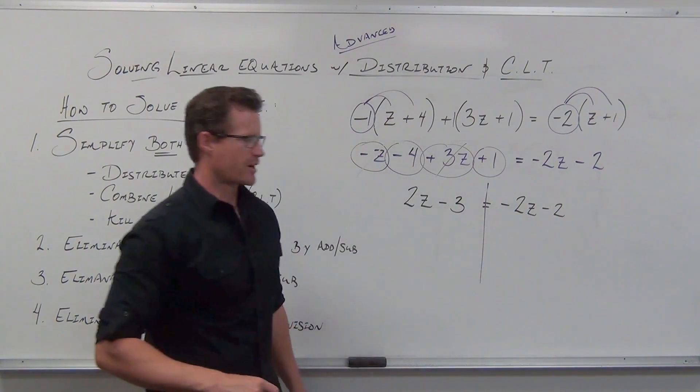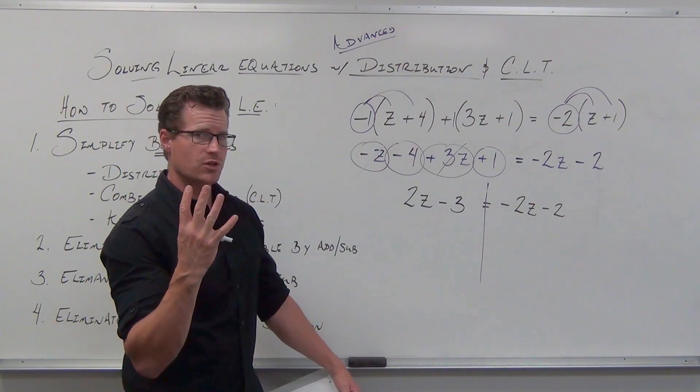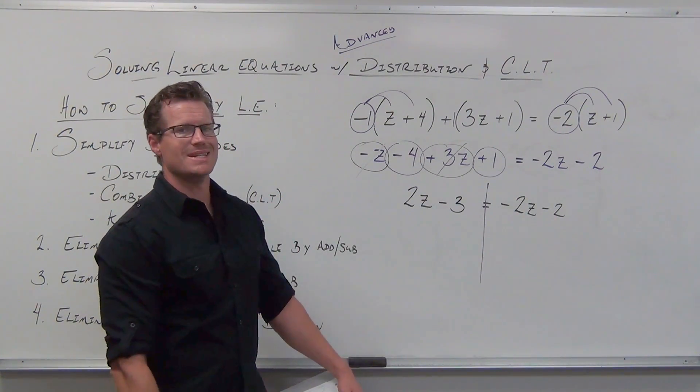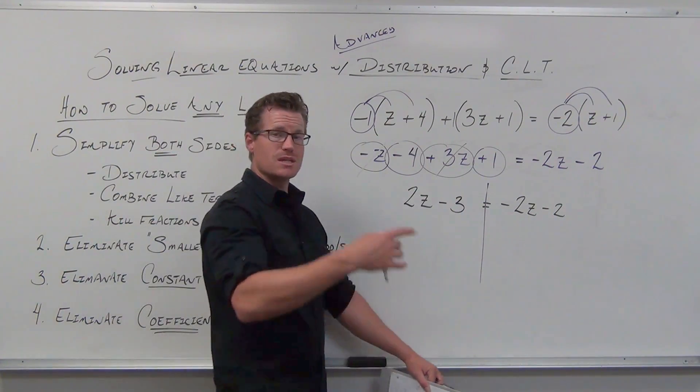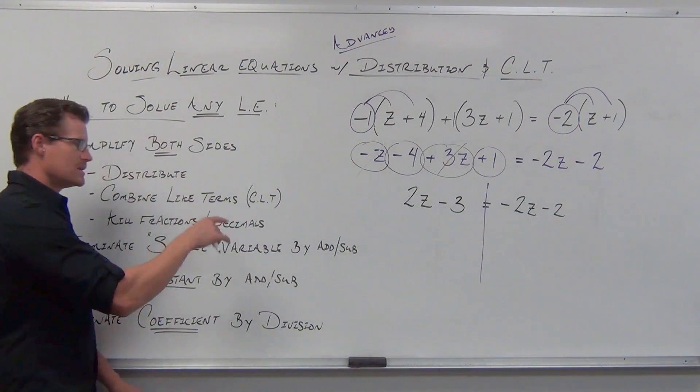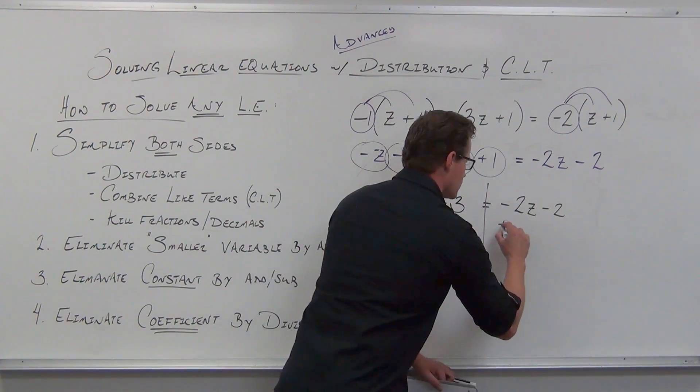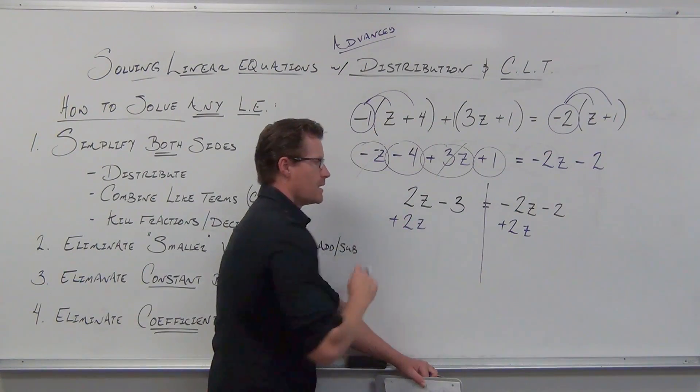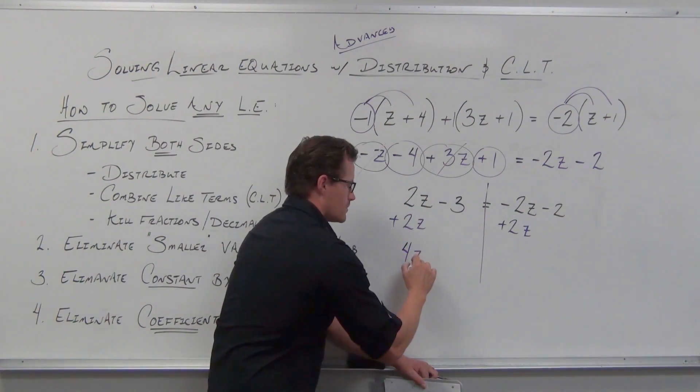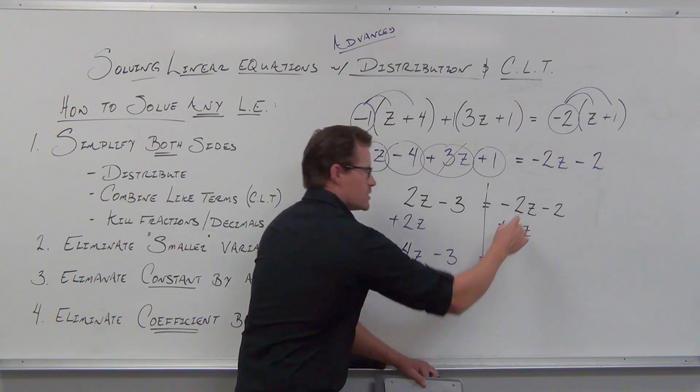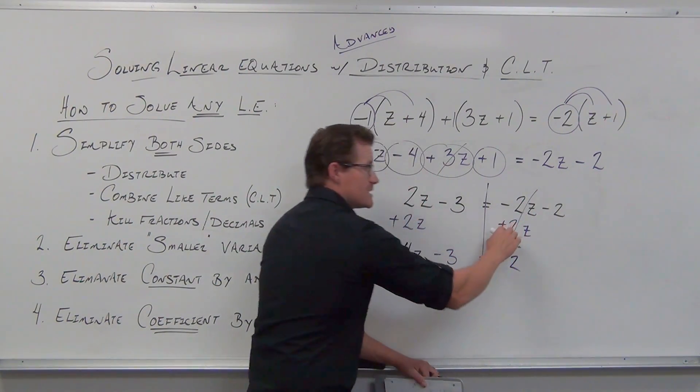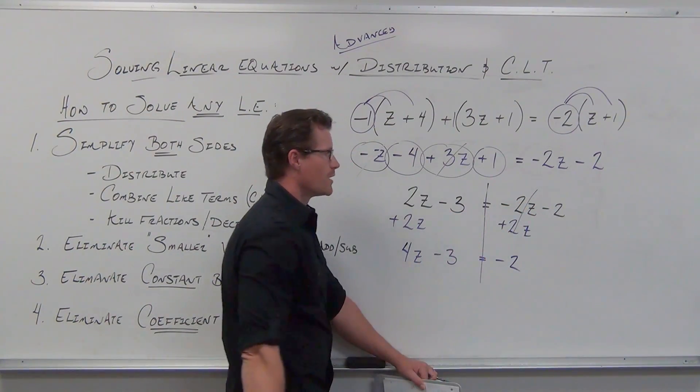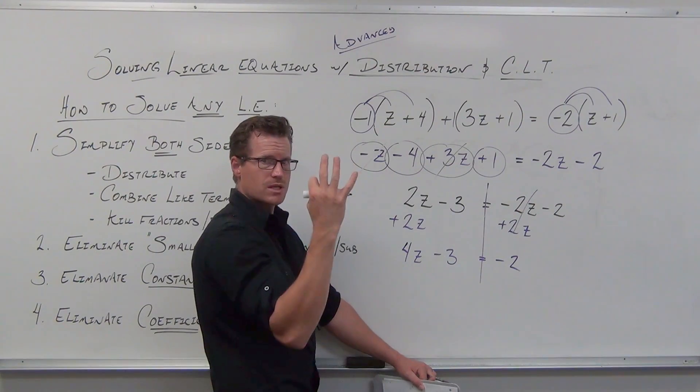Next up, we're going to look for the smaller variable if we have two variables. And if we have four terms, you darn well better have two variables, one on each side. Our smallest variable here is negative 2z. So when we get rid of negative 2z completely, it has to be addition-subtraction. It has to be on both sides of your equation. It's going to create some like terms. It's going to eliminate an entire term. Zero. Zero minus 2 is negative 2. You've got to get the negative. And it's going to say, hey, you went from four terms down to three terms.